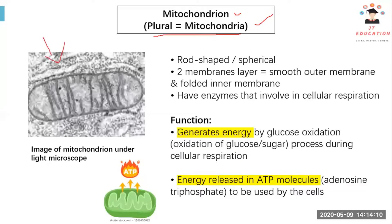This is an image of mitochondria under the light microscope. Mitochondria have two membranes — the outer membrane and then the folded inner membrane. Inside mitochondria we have enzymes involved in cellular respiration, where energy is generated by the oxidation of glucose, which is also called sugar. The main function is generating energy, and that energy is released in the form of ATP molecules.